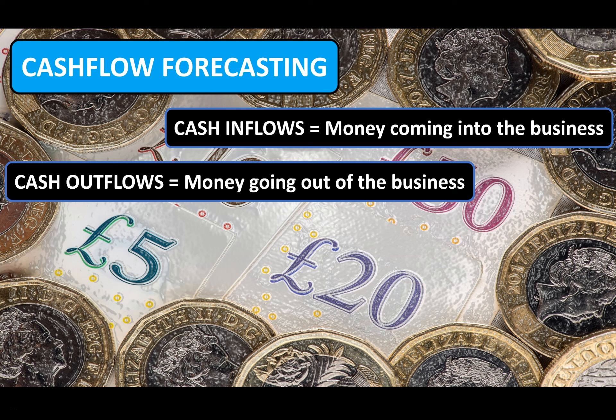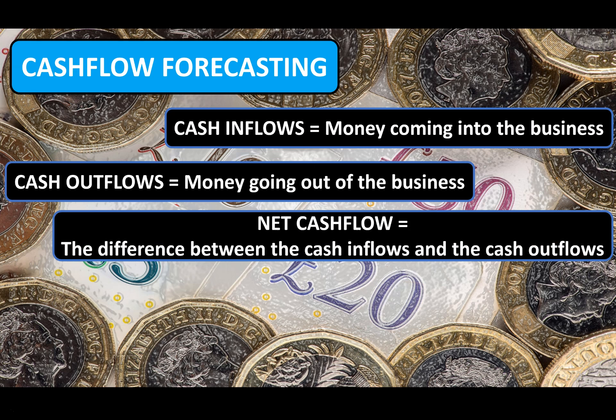Once a business has conducted a cash flow forecast, it provides them with something known as a cash balance. This is an estimate of the bank balance at the end of each period calculated, which is normally shown on a per month basis. A key term to remember when conducting a cash flow forecast is net cash flow, which is the difference between the cash inflows and the cash outflows.